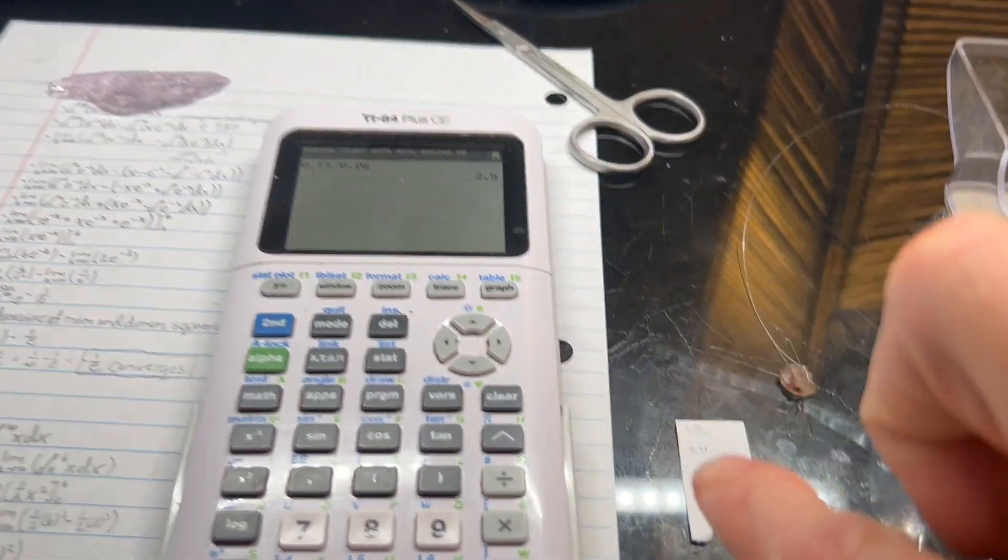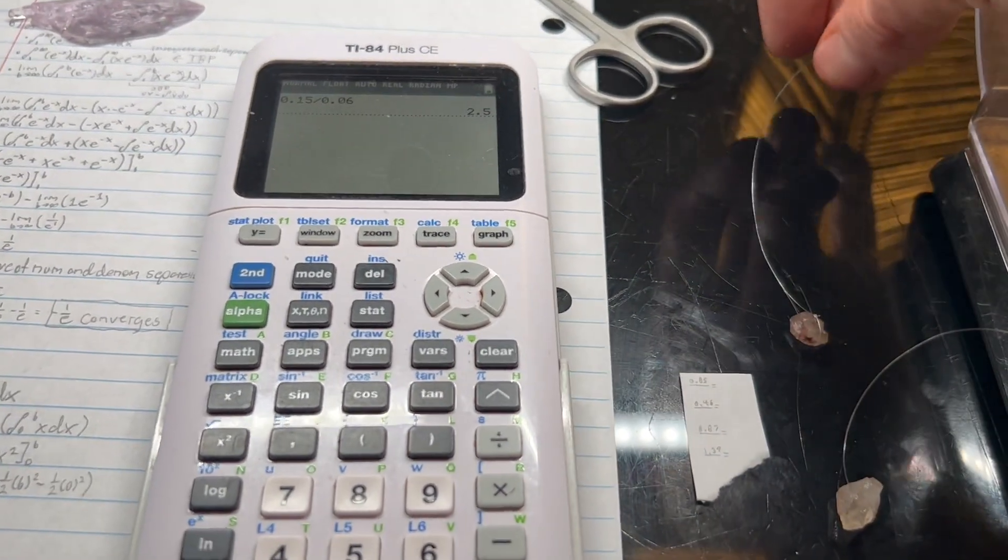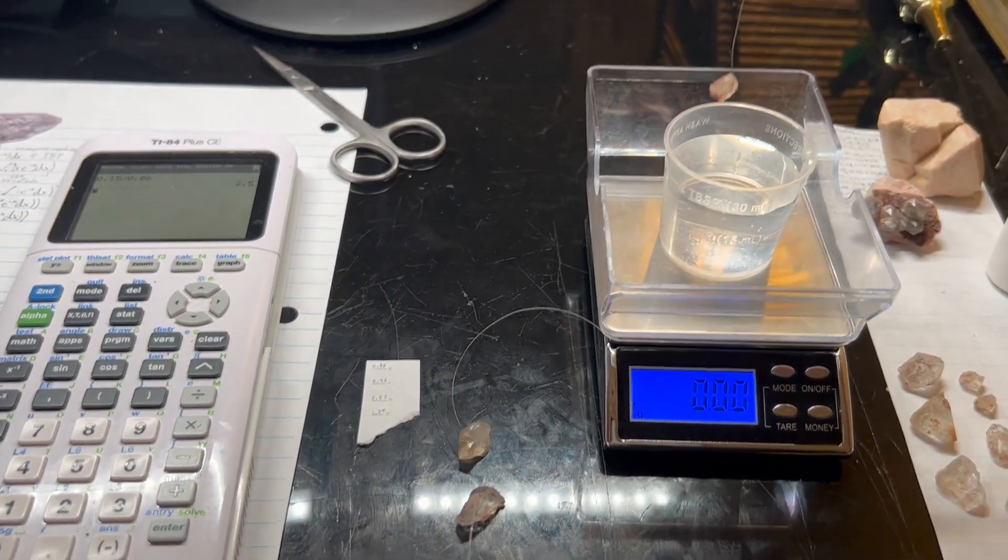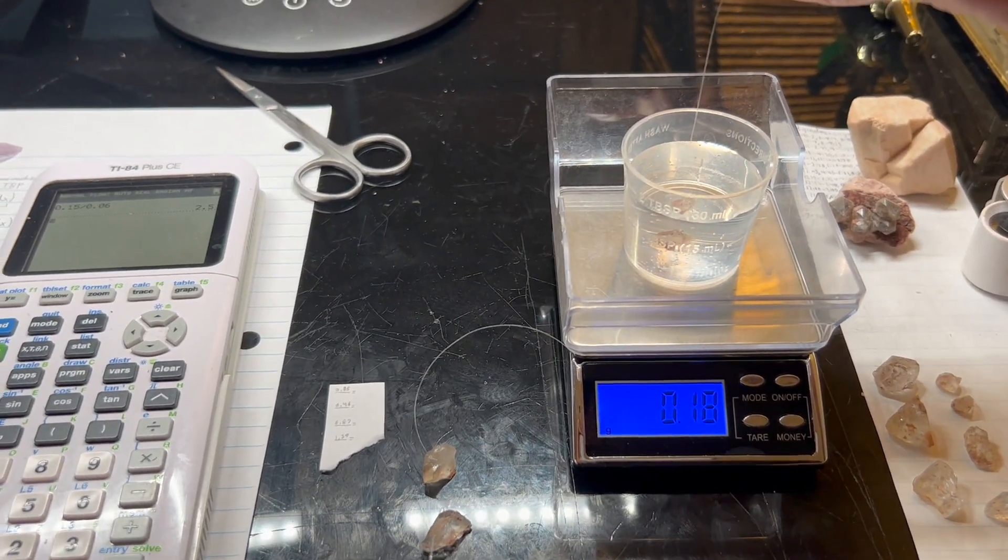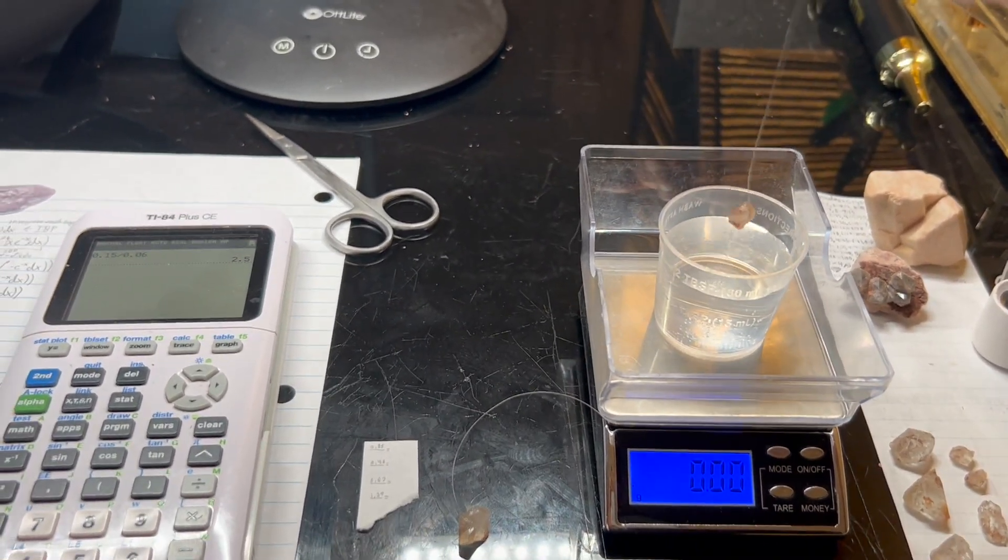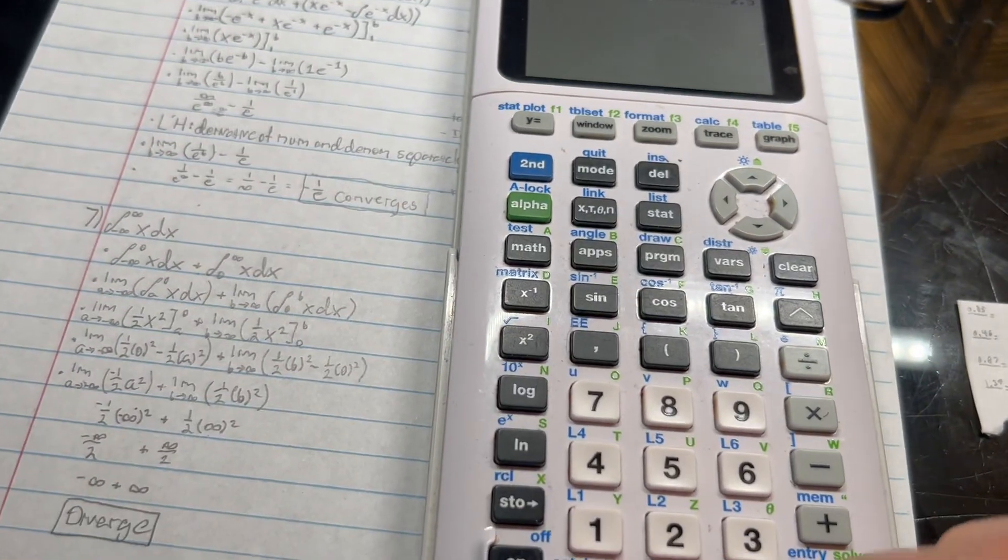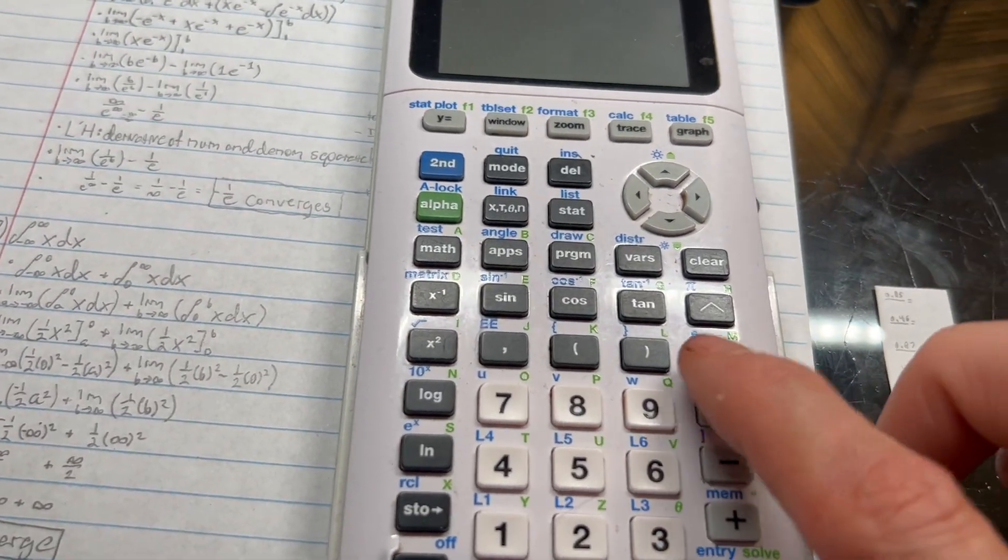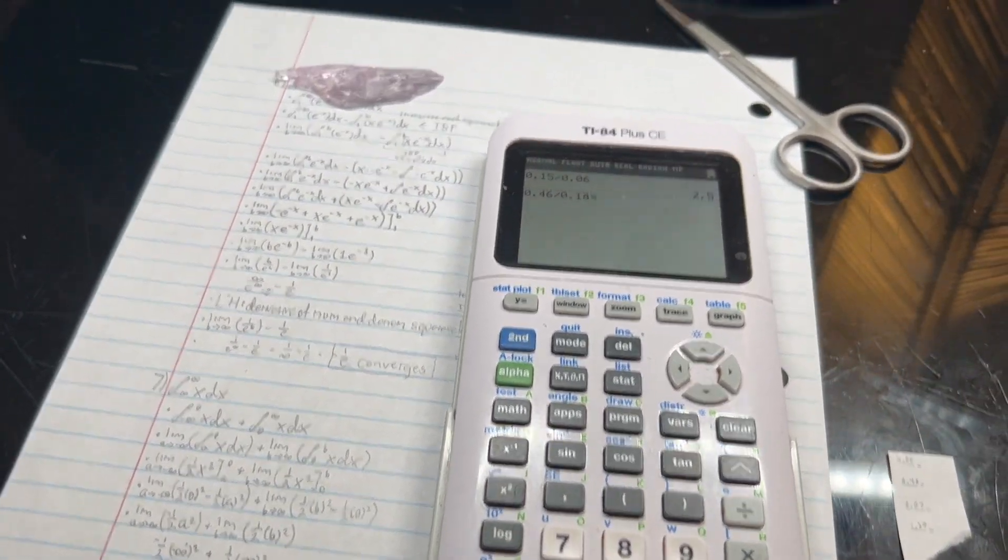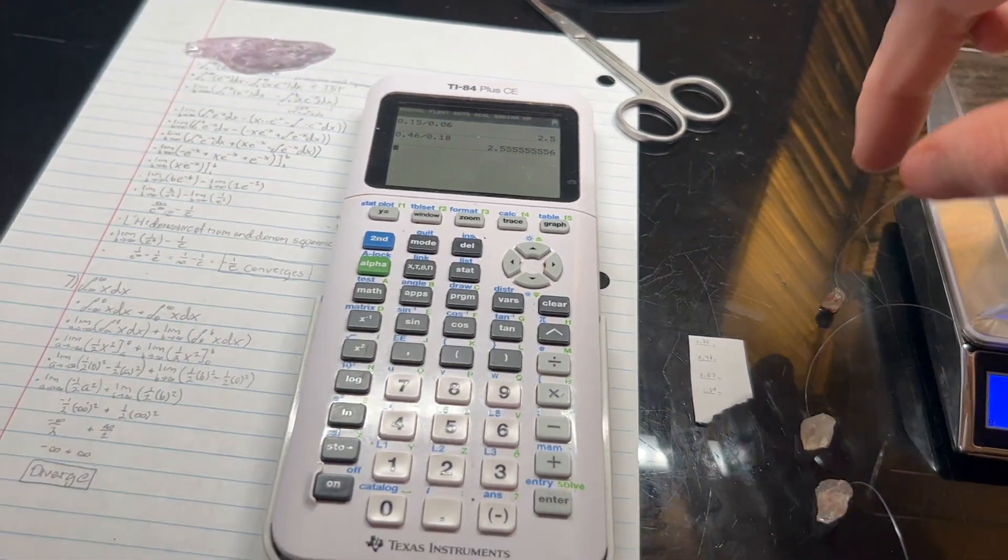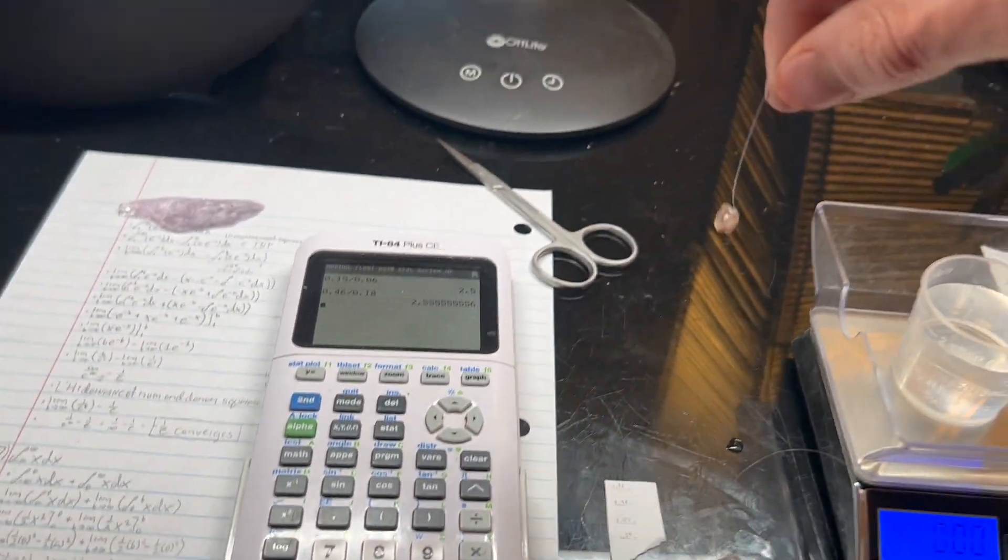Next one up, this one's weight is 0.46 grams. Now we're going to get an immersed weight. 0.18 grams. So 0.46 divided by 0.18 is 2.5. See, very consistent. Doesn't matter if it's a different size. Your big crystal would just have a big bath for it. So that one's definitely quartz as well.